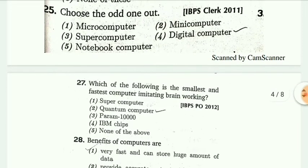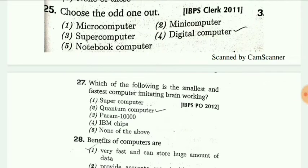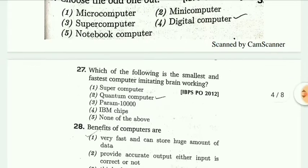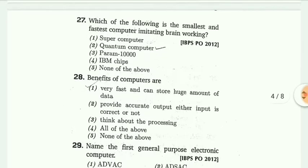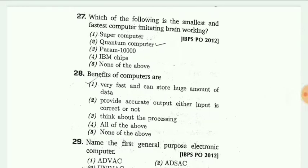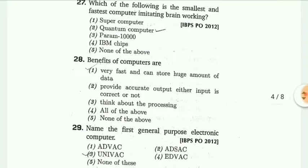Choose the odd one out from: micro computer, super computer, mini computer, digital computer, notebook computer. The answer is digital computer. Next, which of the following is the smallest and fastest computer imitating brain working? The answer is quantum computer.